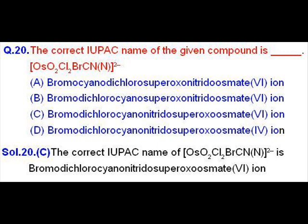And so the correct name should be one in which ligands are named in alphabetical order. So it should be bromodichloro then cyano followed by nitrido. Nitrido is for N3 minus ion. Then it is superoxo which is having 1 minus charge and then it is osmate with plus 6 oxidation state.